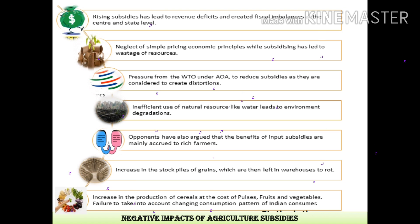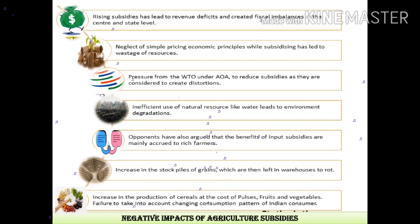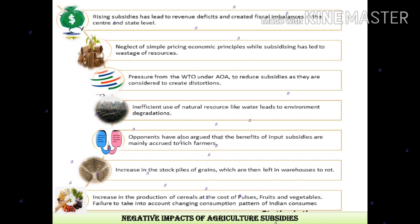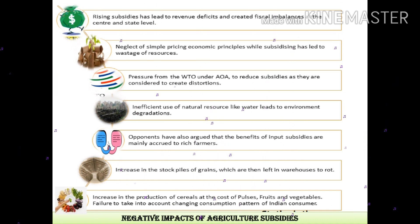The last negative impact is an increase in the production of cereals at the cost of pulses, fruits, and vegetables — a failure to take into account the changing consumption patterns of the Indian consumer. The Indian consumer's consumption pattern shows good demand for cereals, but fruits and vegetables are being neglected.